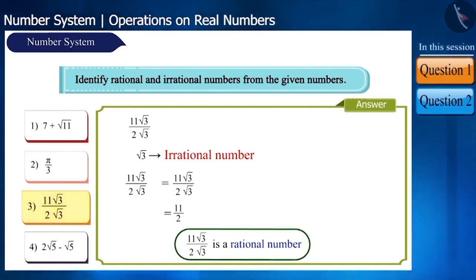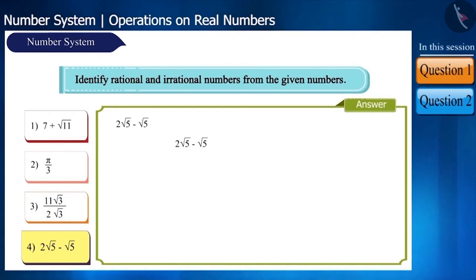Now let's take the last question. Here, by subtracting root 5 out of 2 root 5, we get root 5. And this is an irrational number.